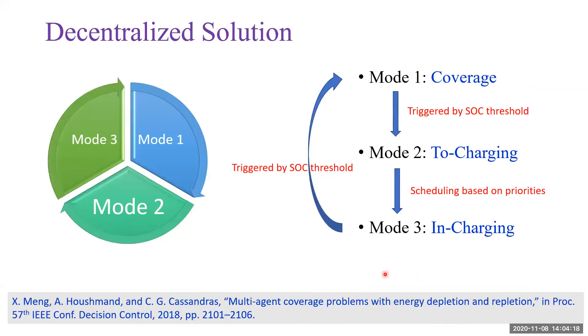We made the first attempt to solve this problem. Our approach is to characterize the behavior of an agent by three different modes. The switch from one mode to another is triggered by the SOC threshold. When there is more than one agent competing for the charging station, we develop a scheduling algorithm.